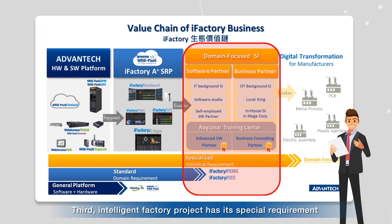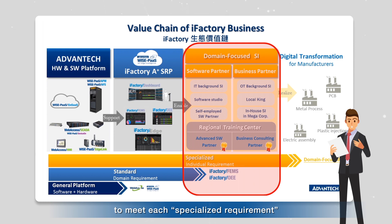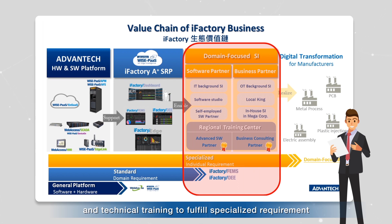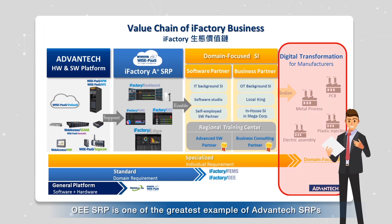Third, intelligent factory projects have their special requirements. System integrators have to customize to meet each specialized requirement. Advantech provides a customized software platform and technical training to fulfill specialized requirements. OEE SRP is one of the greatest examples of Advantech SRP.